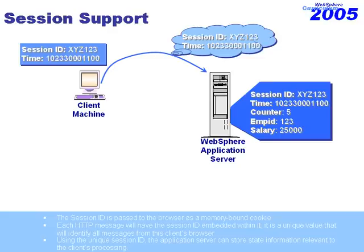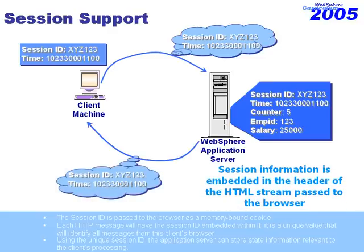Every time the application server responds back to the client and generates message information back, that unique session identifier is going to be embedded directly in the response message — in the header area. So the round trip of the message now is always going to include the session identifier, uniquely identifying my particular client amongst all others accessing the application server. In addition to that, all of my shopping cart or state data can be stored on the application server and keyed off of this unique identifier, the session ID.